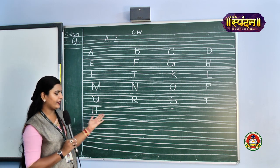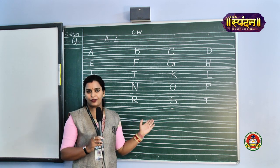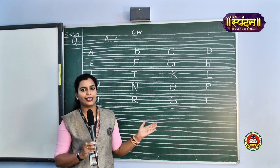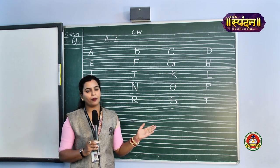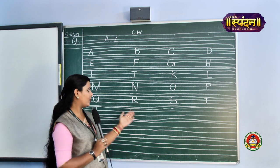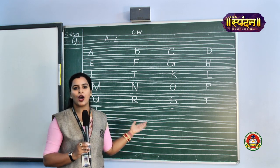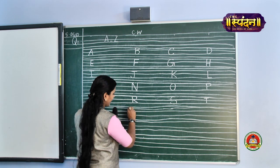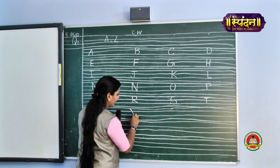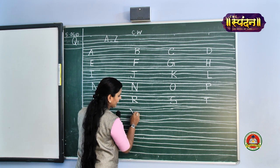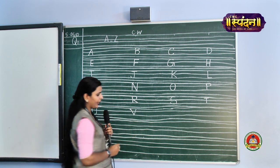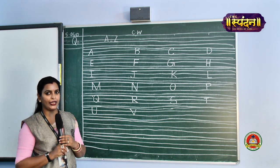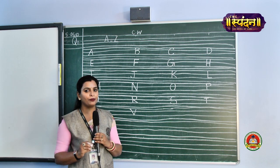After this we have alphabet V. V for van. Our next alphabet is alphabet V, which we are going to write just below R. We will start again with the pink line, bring it to the black line, and then go back again to the pink line. This is alphabet V. I hope you all are writing with me.